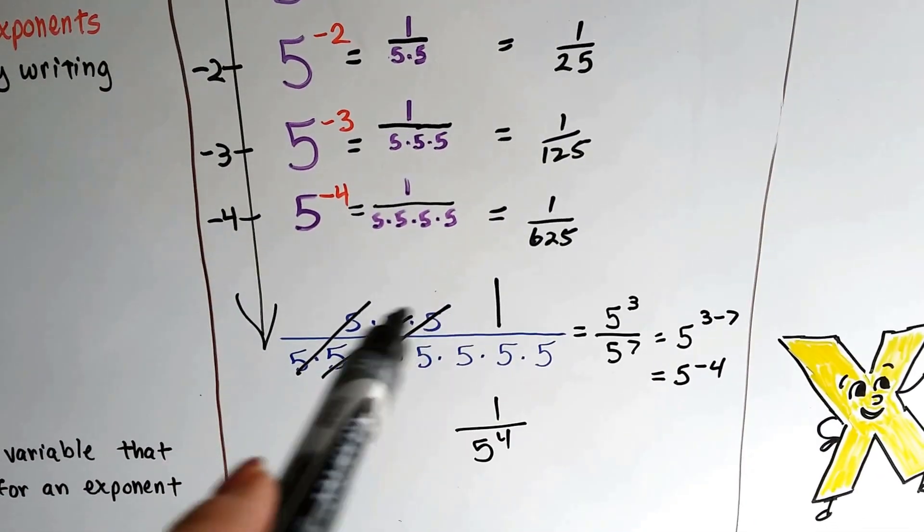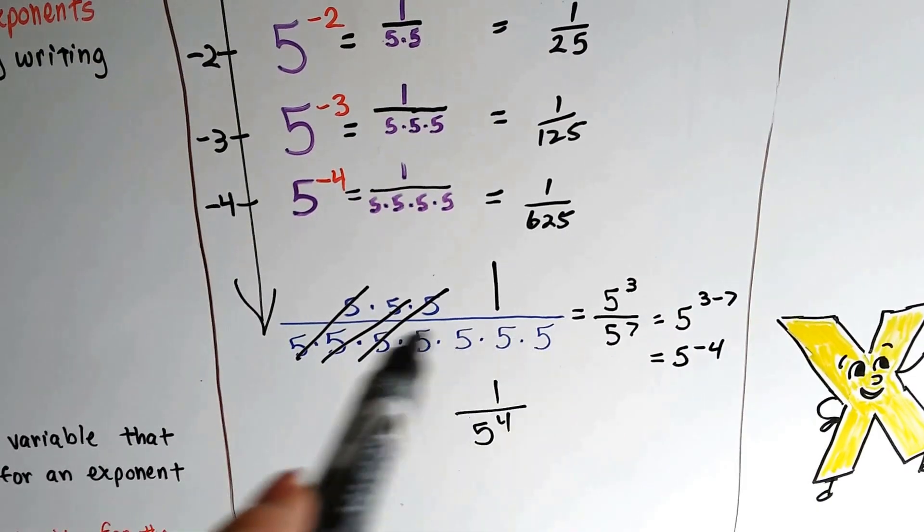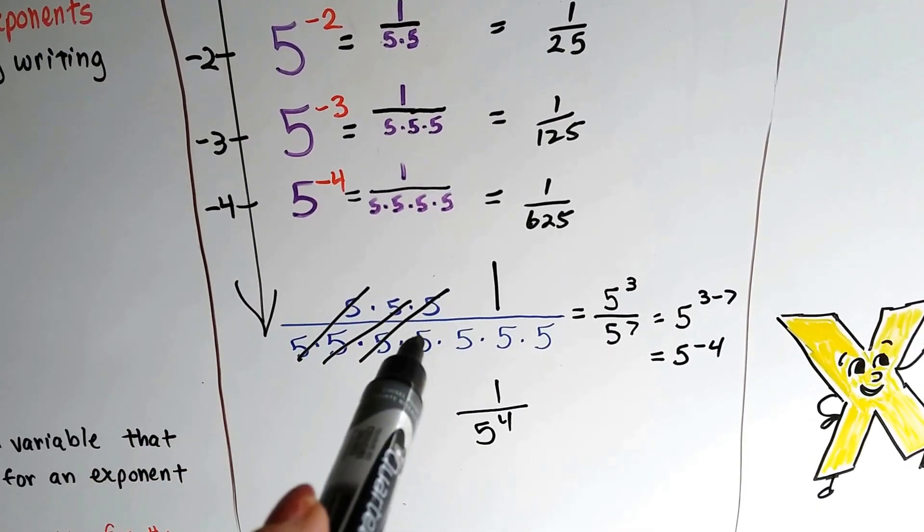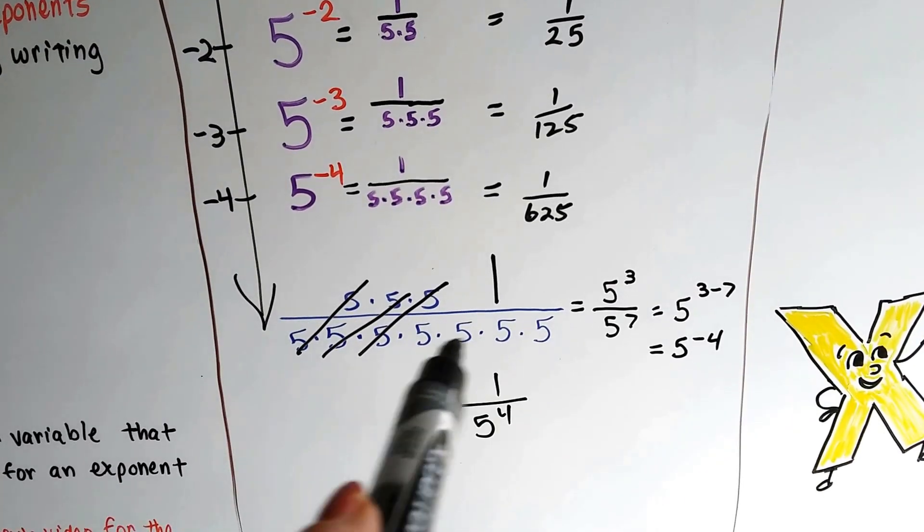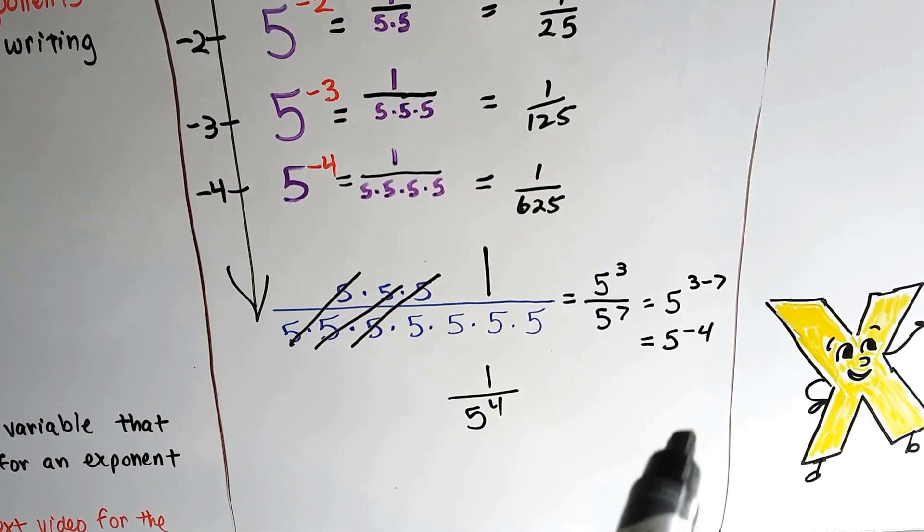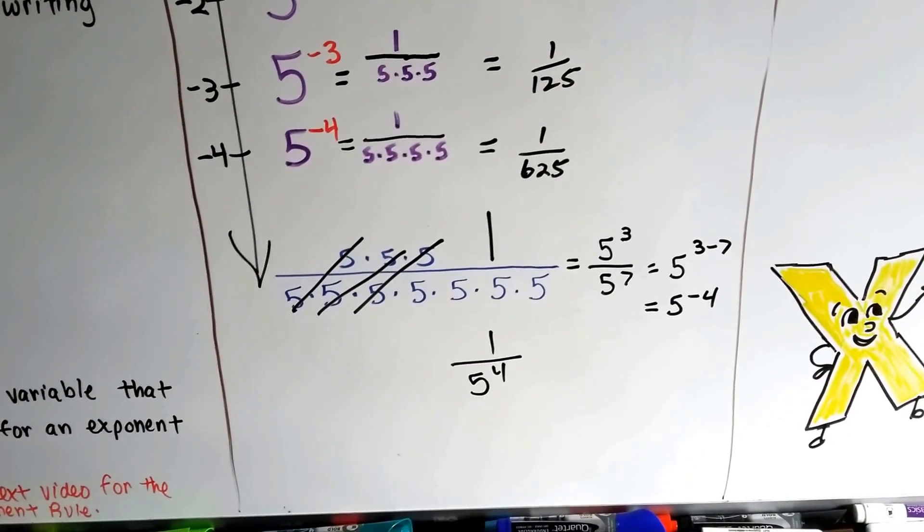So if we had 5 to the third power with 3 fives here, and 5 to the seventh power with 7 fives here, we can cancel out 1, 2, 3 of them, and see that we've got these 4 fives down here. And we put a 1 up on top, and that's our 5 to the negative 4. It would be written as 1 over 5 to the fourth power.